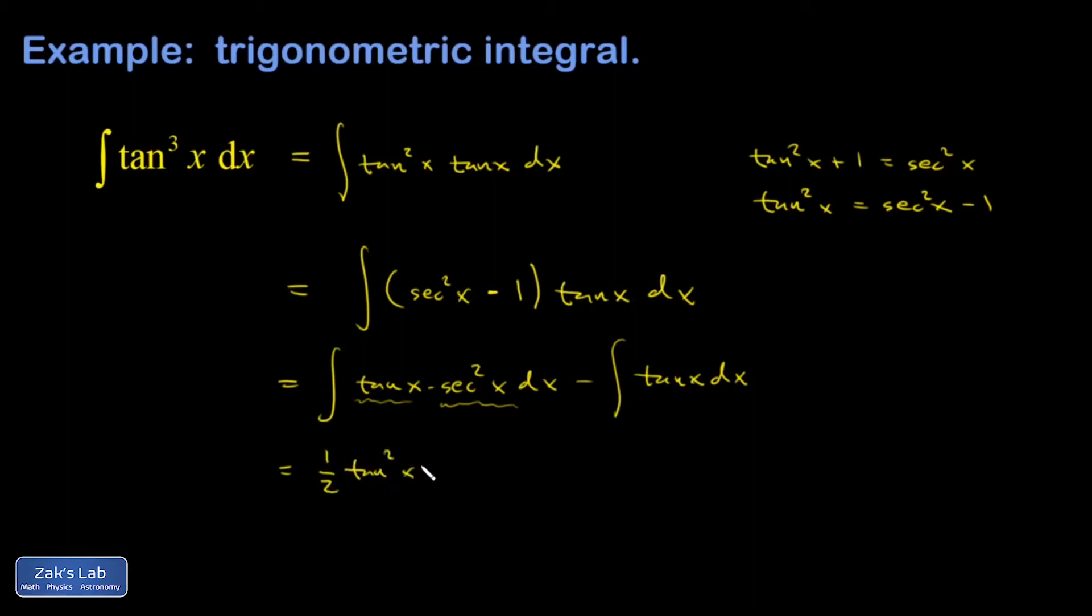And then just mentally, normally I would just mentally differentiate to make sure I got back to what I started with. If I differentiate this, I would get 2 tangent x, which kills the 1 half. And then the chain rule would say tack on the derivative of tangent with respect to x, which is secant squared. So this part is all good.